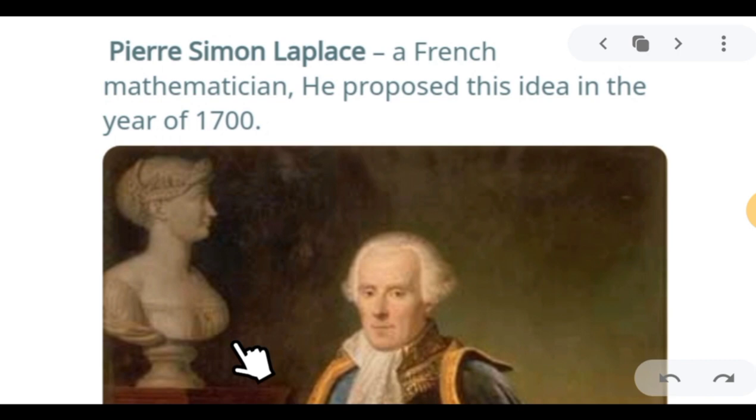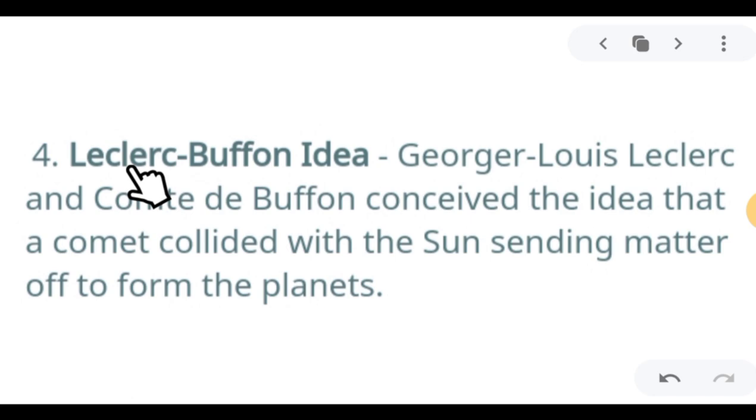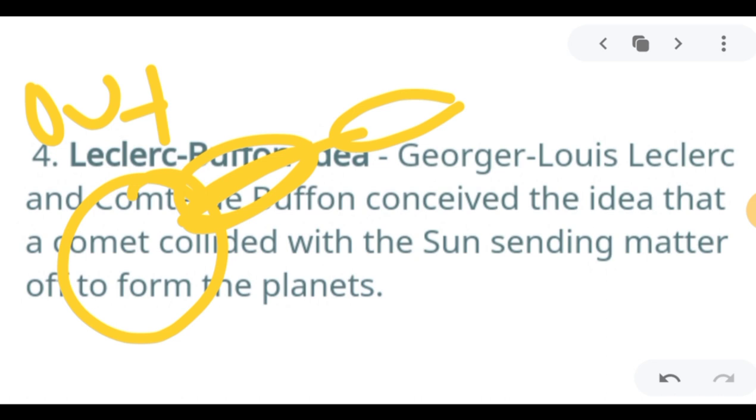Next theory is the Leclerc-Buffon Idea, proposed by Georges Louis Leclerc and Comte de Buffon, who conceived the idea that a comet collided with the sun, sending matter off to form the planets. For example, this is the sun and this is the comet that will strike the sun - they collide and then there is outgassing.